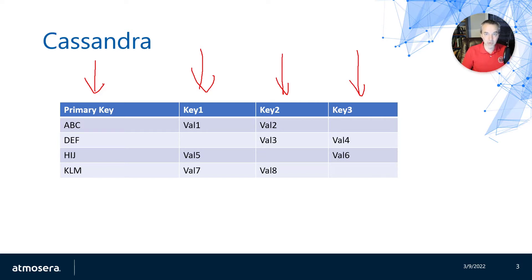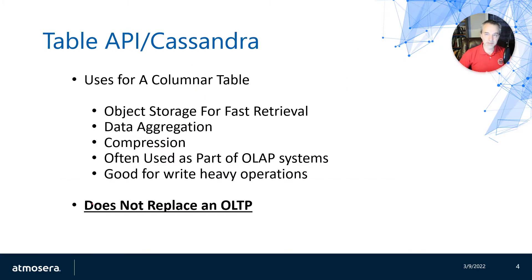Cassandra is not a replacement for an RDBMS — it doesn't lend itself well to relational data — but it does allow a lot of append operations very quickly. It also allows tight, massively scalable data storage across multiple disks. One common use case is object storage, since you can index a column, grab the data, and return it very quickly — reading and writing data efficiently.